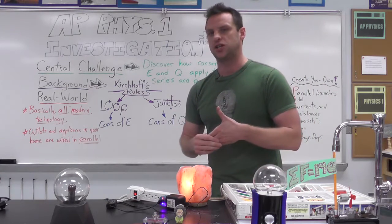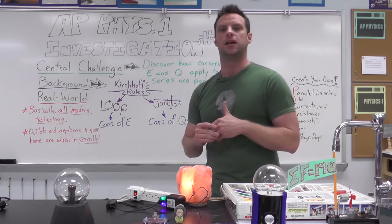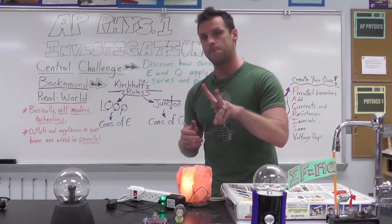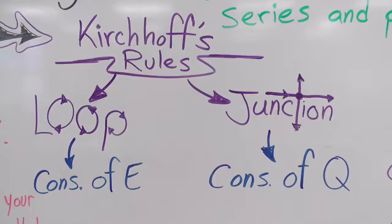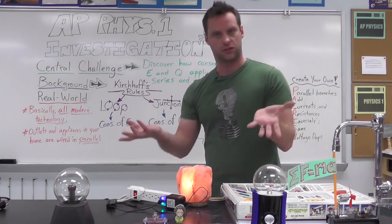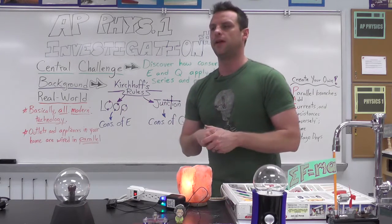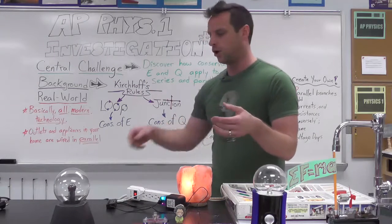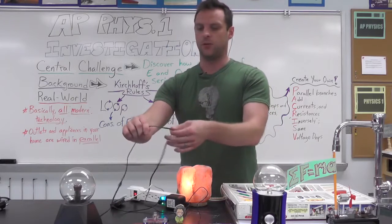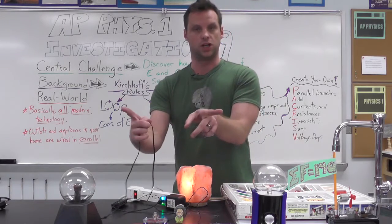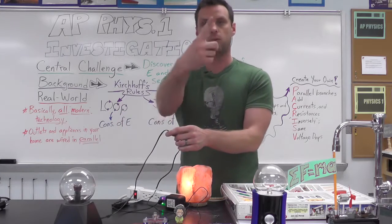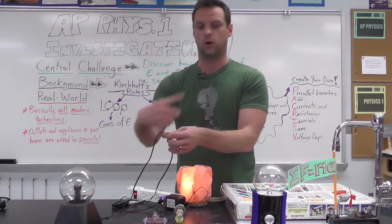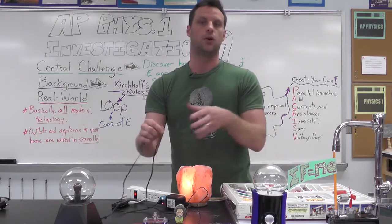Coming into this investigation you should have already had some training in things like Kirchhoff's rules. There are two of them: the loop rule and the junction rule. The loop rule is linked to the conservation of energy and how that works in a loop or a circuit. The junction rule is how the conservation of charge applies to circuits, where charge is going to flow through a line and then when it reaches a splitting point or a junction, some of the current is going to flow one way and some of the current is going to go the other way.